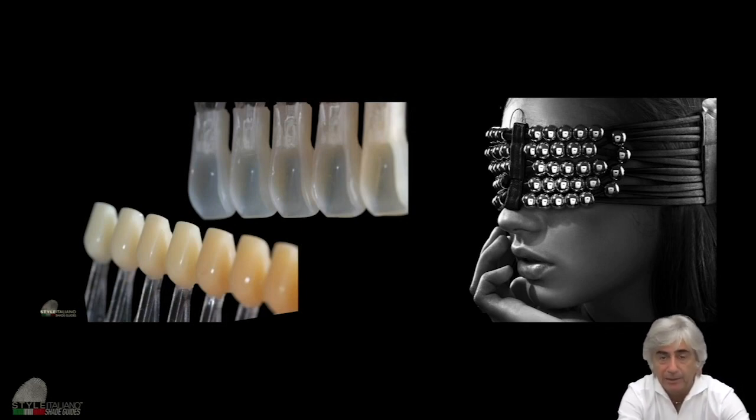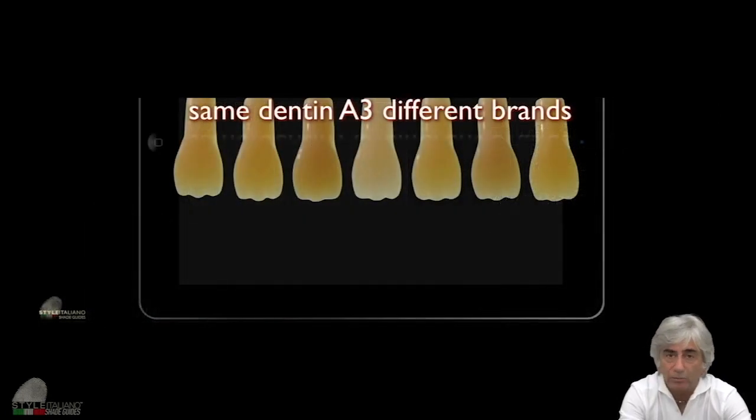So these other companies say, I have the dentine, I have the enamel, I put together, I put a little bit of glycerin in the middle to avoid the air, and I check the color. This is correct. It's a good step forward. But they don't suggest you which is the thickness of the material that we have to put, and the algorithm is unbelievable.